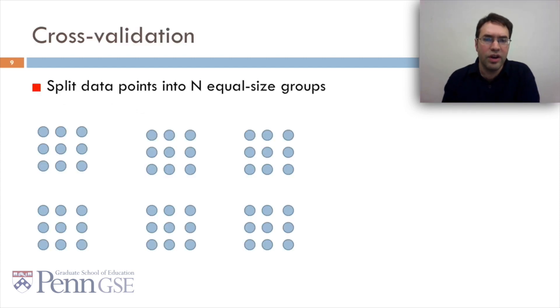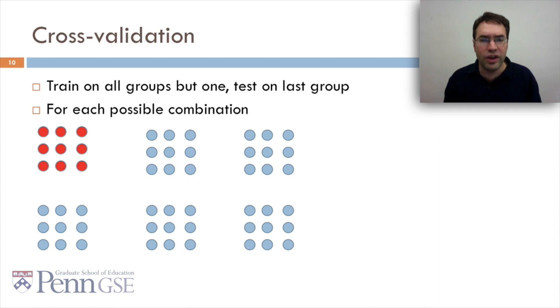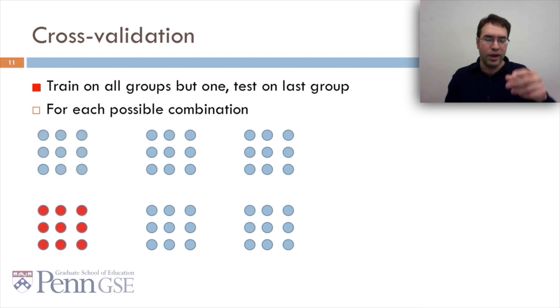Cross-validation is an alternative where you split data points into n, in this case six, equal-sized groups. So we've taken our 54 data points and we've split them into six groups of nine apiece. In cross-validation, you're going to train on all the groups but one, and test on the last group for each possible combination. So we're going to take these five blue groups, we're going to train on them, and then we're going to test on the red group. And then we're going to change which one's the red group and train on these five blue groups and test on this red group, and so on for all possible combinations.